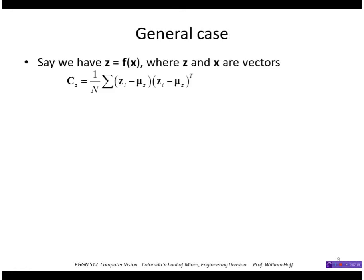Let's look at the general case. I have a vector x and a vector function f, which returns a vector z. So the covariance of z is defined as this, and I can also write that as the expected value of that quantity.